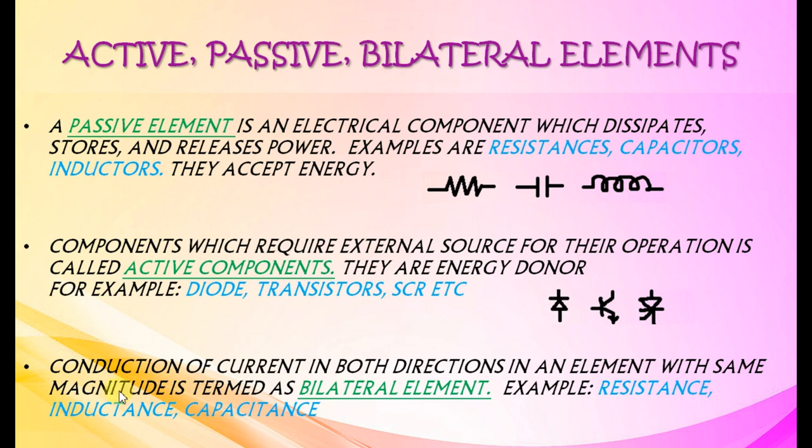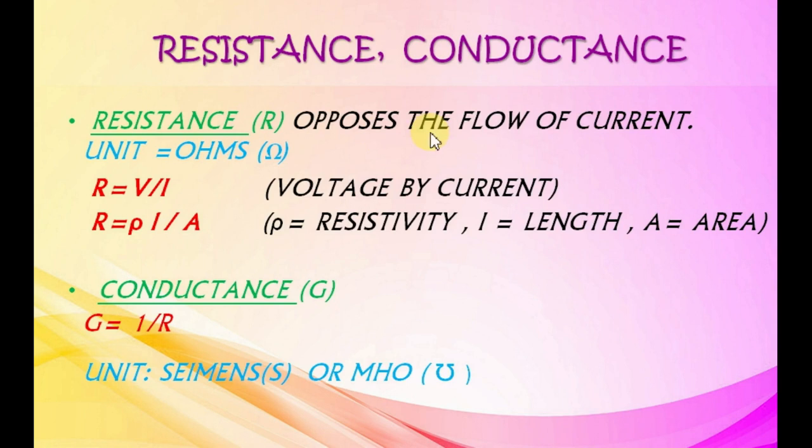Conduction of current in both directions in an element with same magnitude is termed a bilateral element. Examples are resistance, inductance, and capacitance.